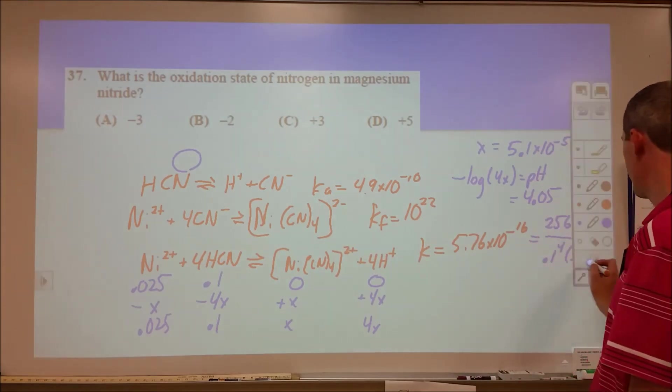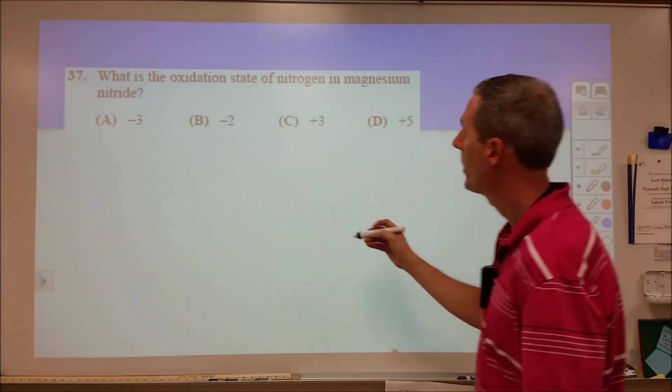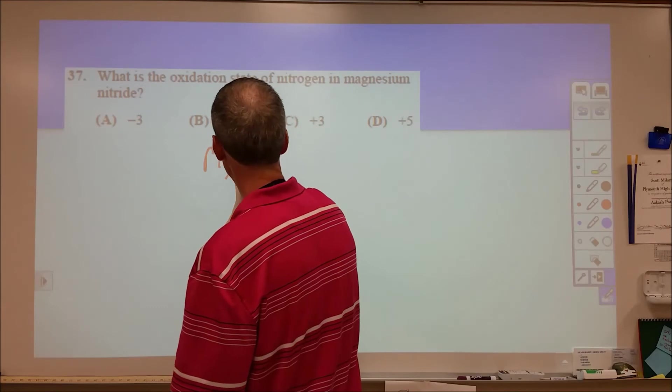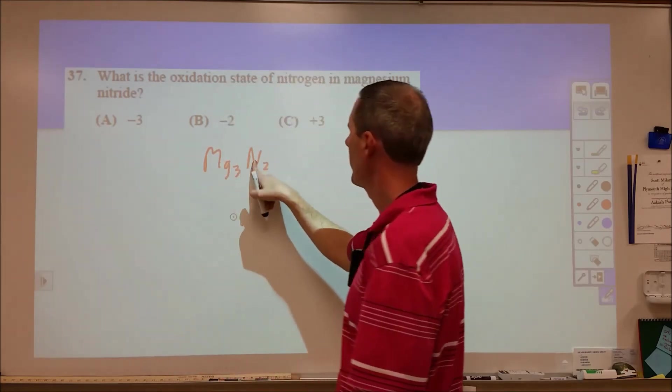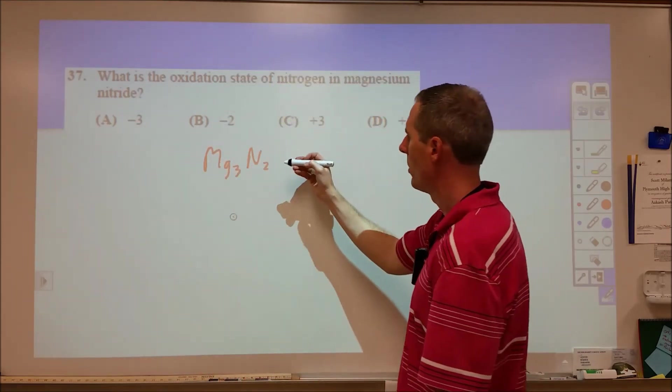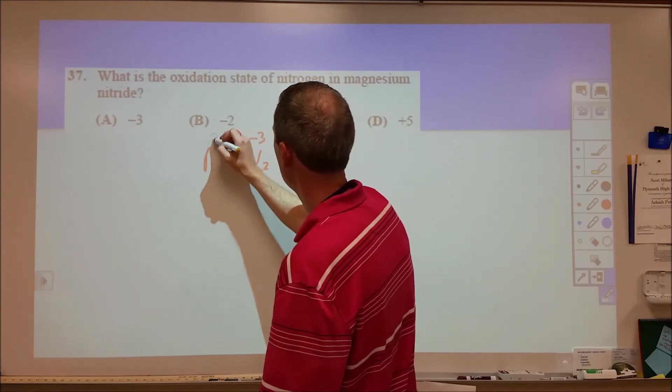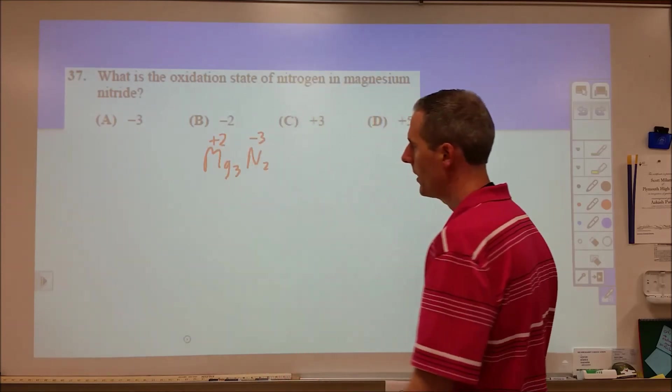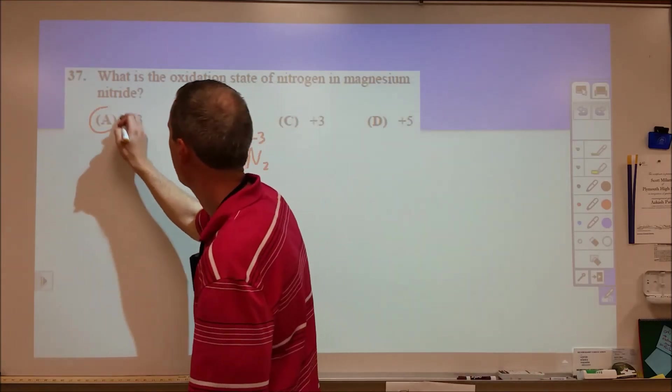Follow that up with a nice, basic, easy question. Magnesium nitride. The magnesium is less electronegative, nitrogen more electronegative. So real simple there, we're going -3 and +2 for the oxidation states. Nothing tricky on that, piece of cake.